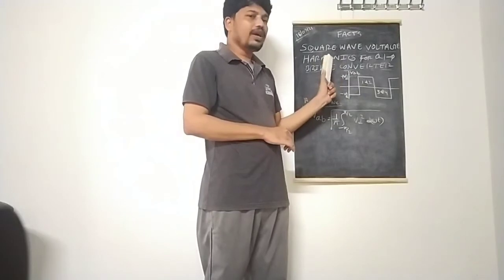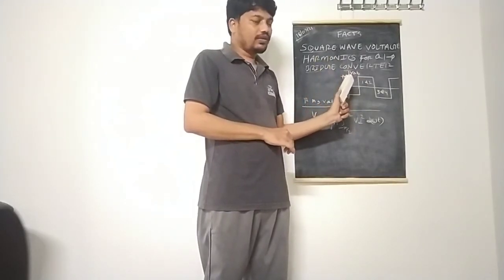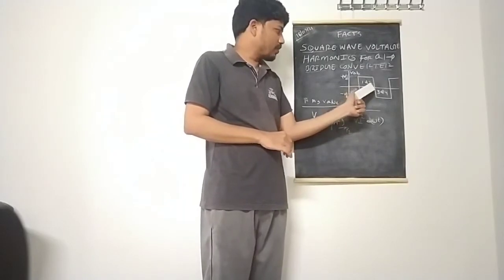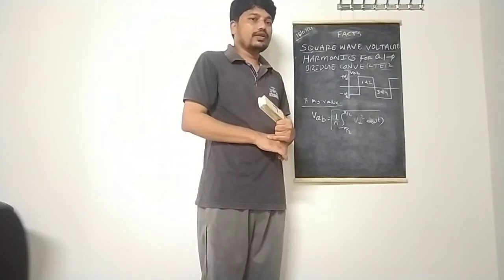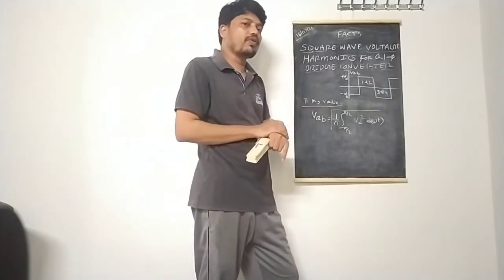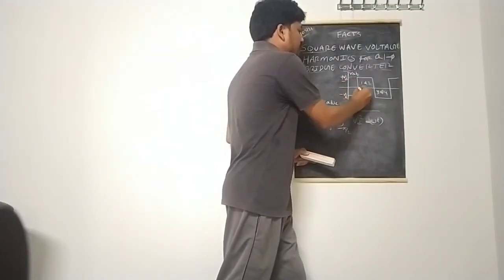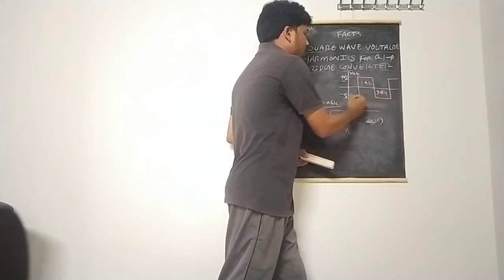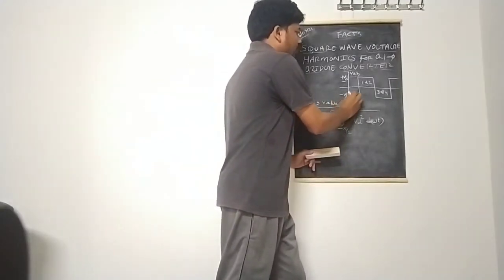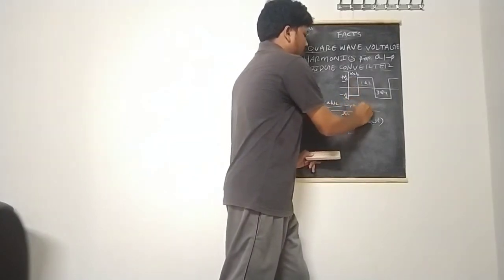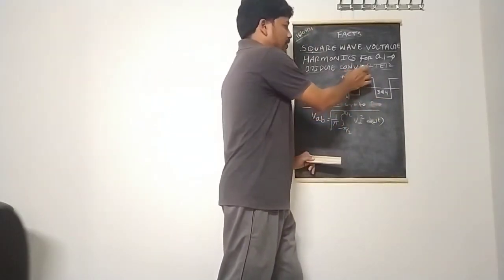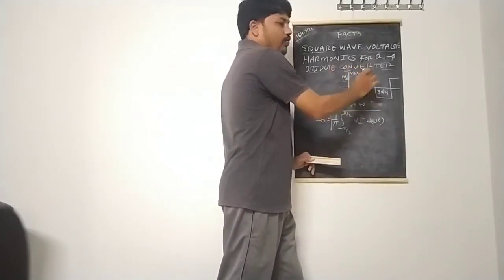We have a bridge converter diagram showing the output AC waveform, and we want to find the RMS values of this voltage waveform. The output is plus VDC when valves 1 and 2 are on, and minus VDC when valves 3 and 4 are on. Because this is a symmetrical waveform, we find the RMS value of VAB with respect to the peak value of VDC. VAB is the voltage across the converter — it is the AC system voltage.